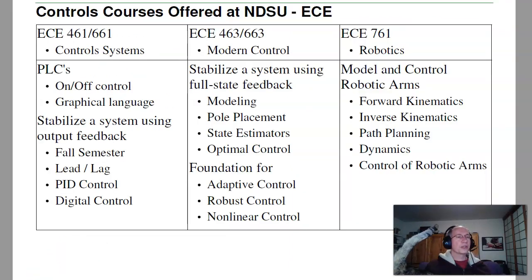Now, the control courses offered at NDSU are 461 Control Systems in the Fall. That covers Programmable Logic Controllers, PLCs. Those do things like control car washes. I can turn on and off valves, turn on and off pumps. It has a graphical language interface. It also looks at stabilizing dynamic systems using lead lag compensators, PID control, and digital control.